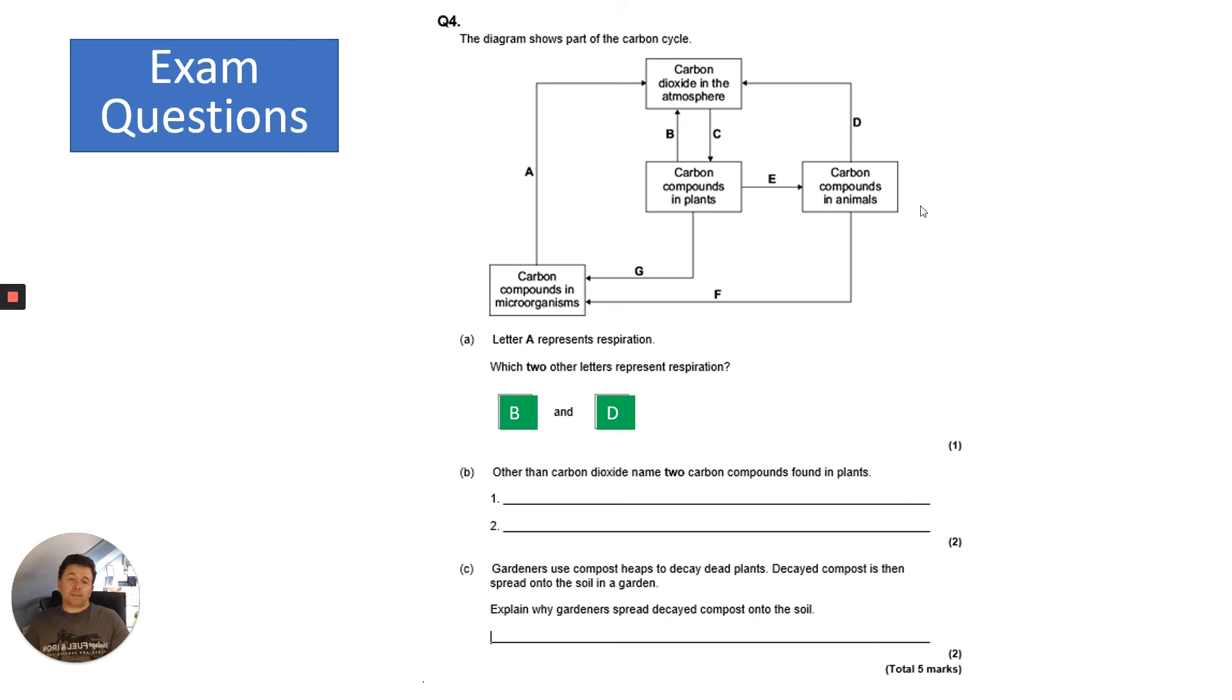Other than carbon dioxide, name two carbon compounds found in plants. That's a bit more difficult, but you need to think what are plants using the carbon dioxide for? It's converted into things like carbohydrates, proteins, fats, amino acids, chlorophyll, DNA - there are lots of different answers you could have.